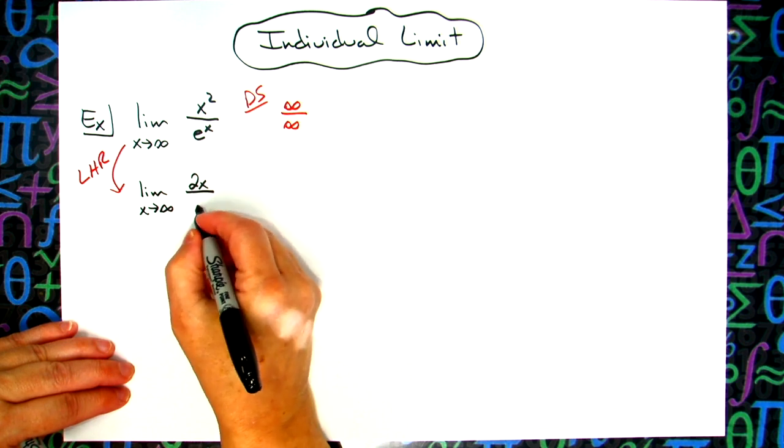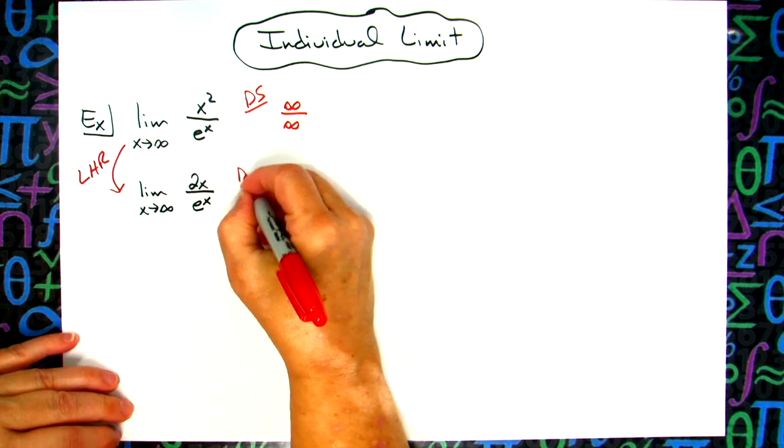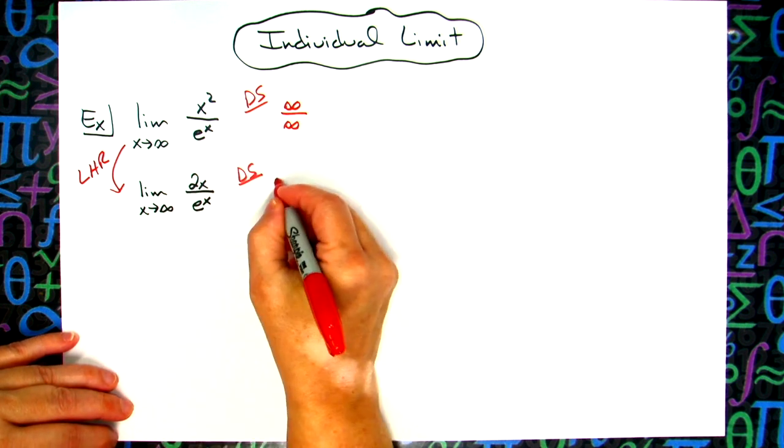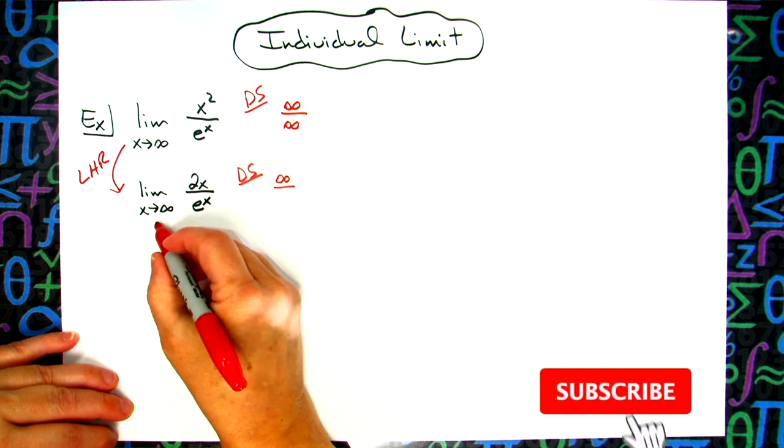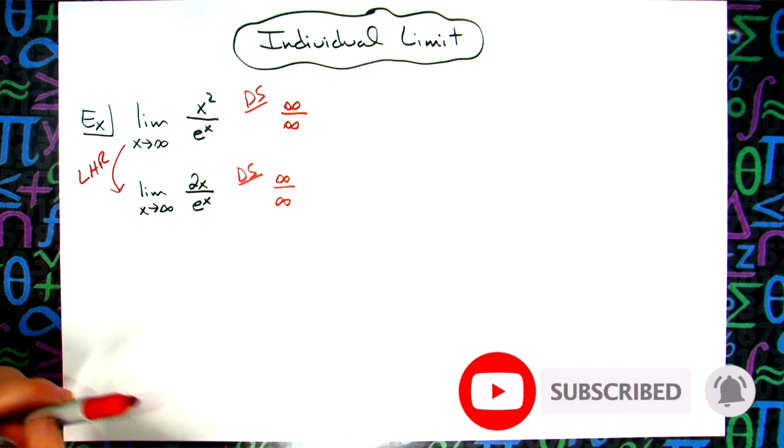Taking the derivative of e^x, we have e^x. Again, we check direct substitution. Plugging in infinity, 2 times infinity approaches infinity. e^infinity also gives infinity. So again we have an indeterminate form.